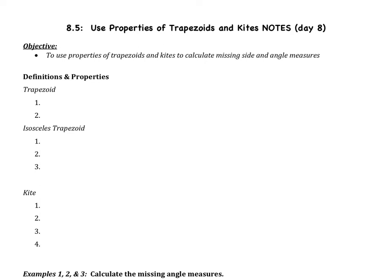Hi, and welcome to our video on section 8.5, which covers properties of trapezoids and kites. So far in this chapter, we've learned about the parallelogram family — specifically squares, rectangles, and rhombuses. Today we're going to be learning about trapezoids and kites, which are not in the parallelogram family. The objective is to use the properties of trapezoids and kites to calculate missing side and angle measures.